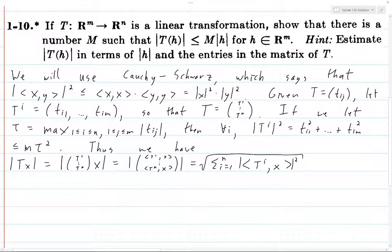So then this is less than or equal to, now we can use Cauchy-Schwarz on the inside of the sum. So we got the sum from i equals 1 to n of the norm of T^i squared times the norm of x squared.